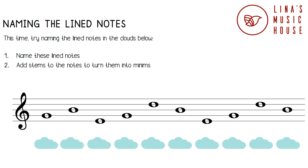Let's try naming these line notes. The suggested rule for working out the line notes is Every Good Boy Deserves Fruit. The first note is on the second line. The second word in Every Good Boy Deserves Fruit is Good, and the first letter of Good is G, so this is a G note. The next note is on the third line. The third word is Boy, so this is a B note.